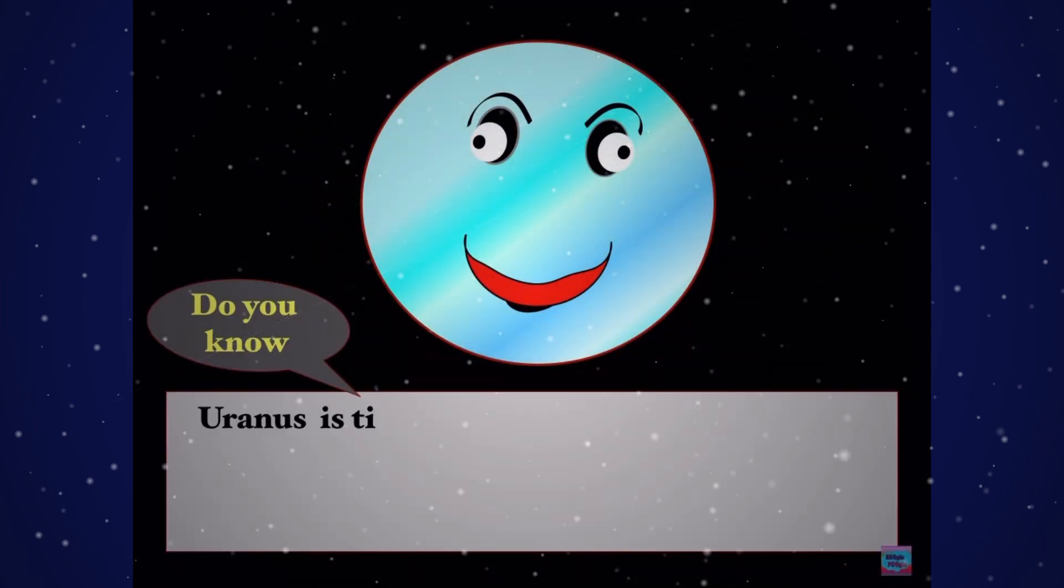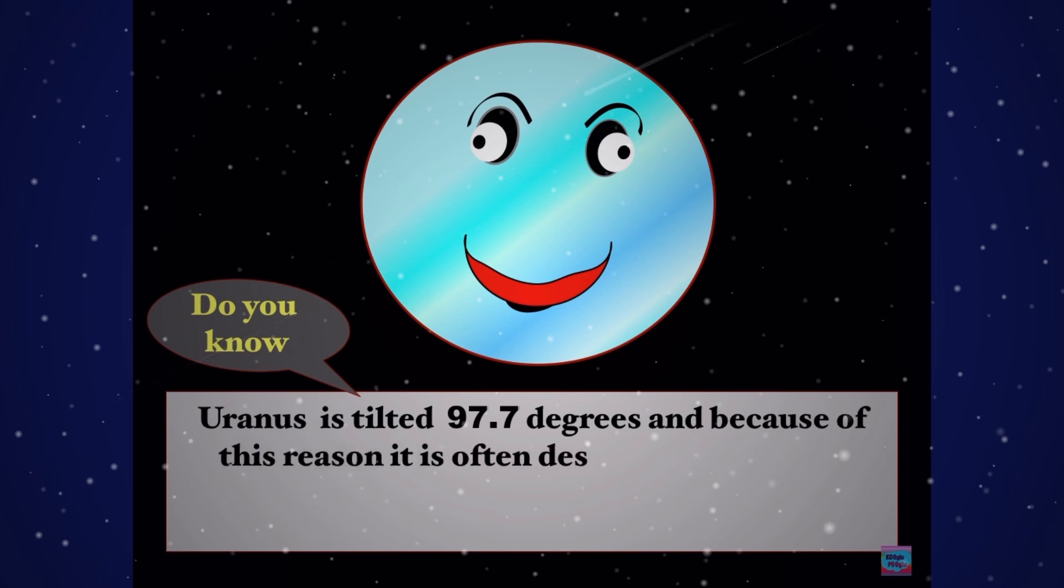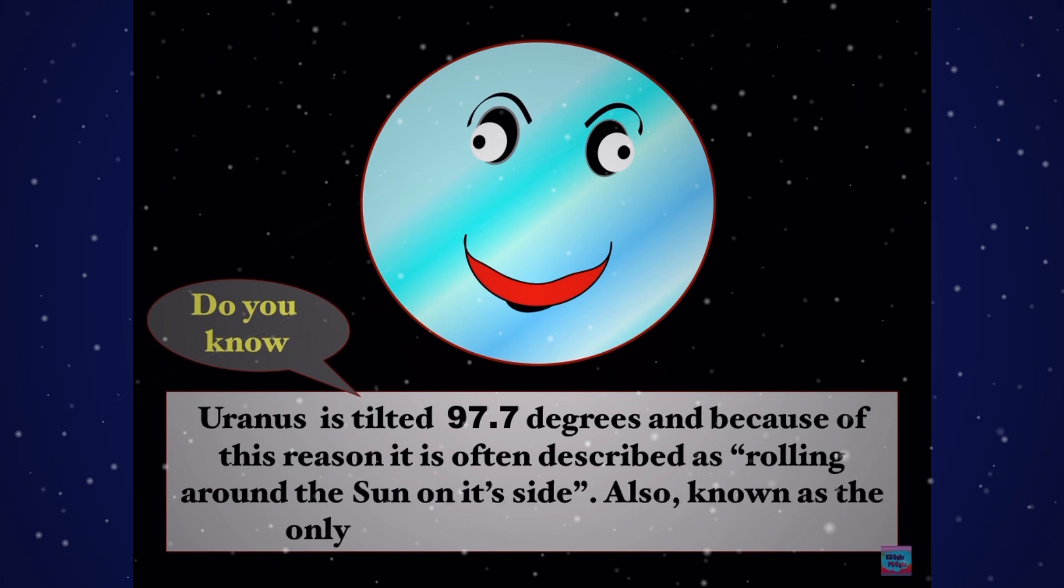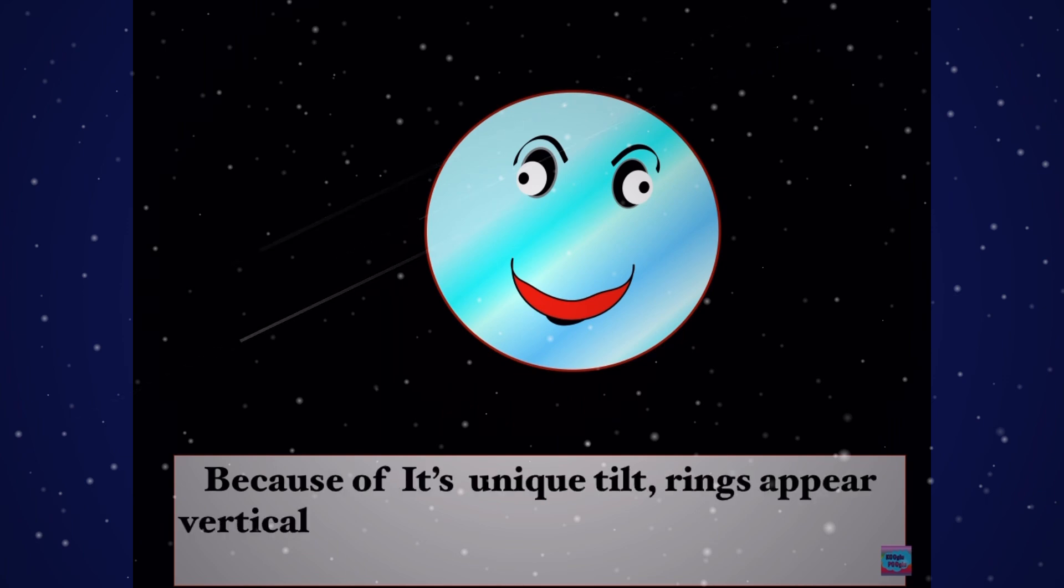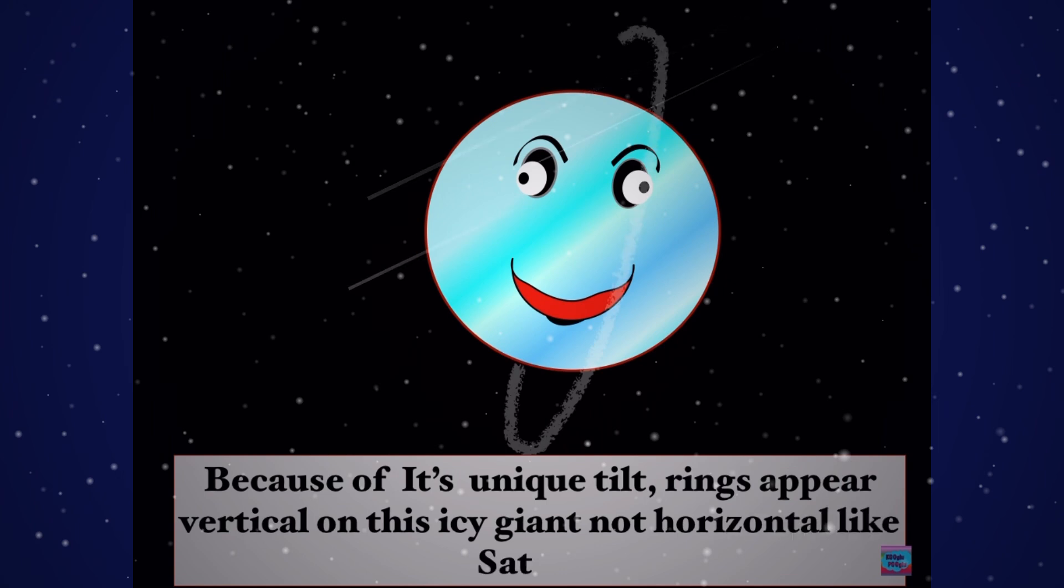Do you know, Uranus is tilted 97.7 degrees, and because of this reason, it is often described as rolling around the Sun on its side. Also known as the only planet that spins on its side. Because of its unique tilt, rings appear vertical on this icy giant, not horizontal like Saturn.